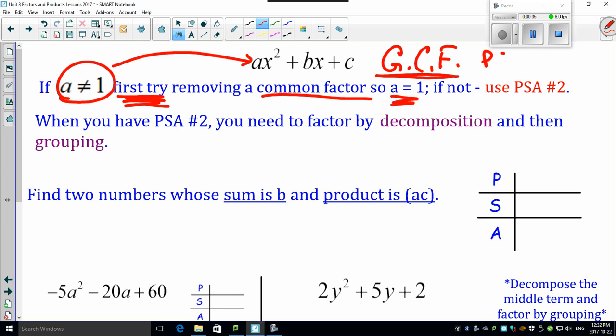But if you're stuck and can't remove the factor, or if you remove a factor and that a is not 1 anymore, you're gonna have to use PSA 2. What is PSA 2 all about? It's factoring called the decomposition method, and you're gonna be grouping.